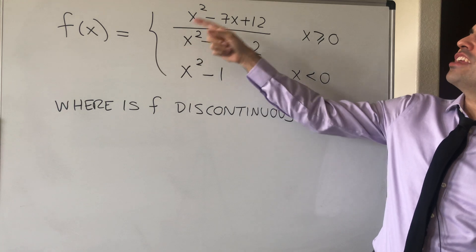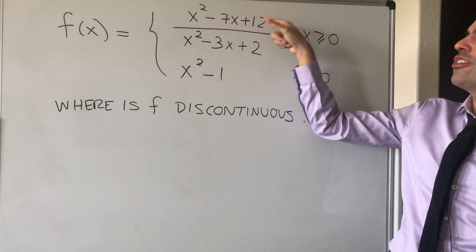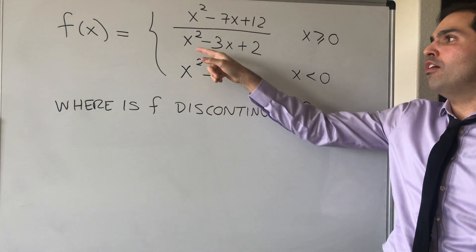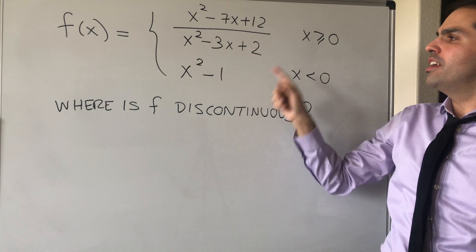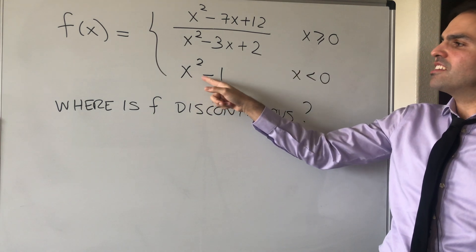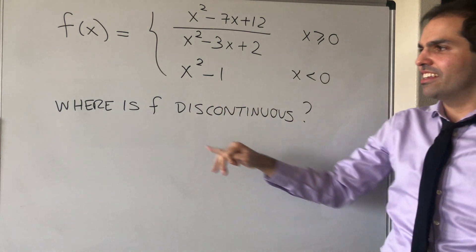So consider the function f of x, which is x squared minus 7x plus 12 divided by x squared minus 3x plus 2 if x is greater or equal to 0, and x squared minus 1 if x is negative.